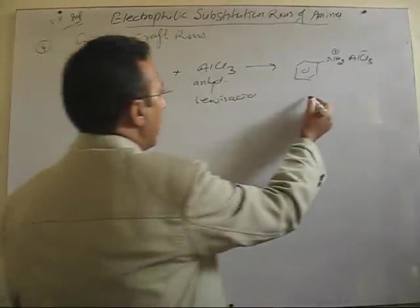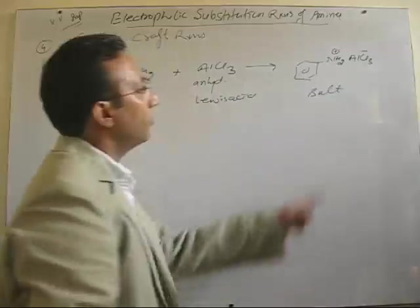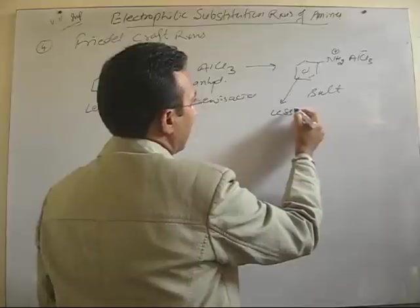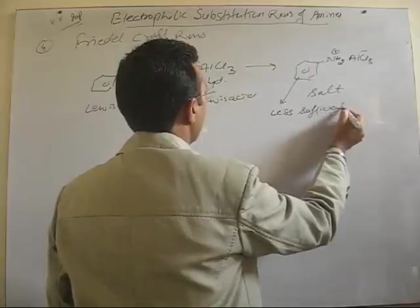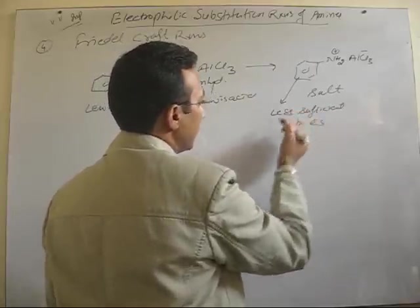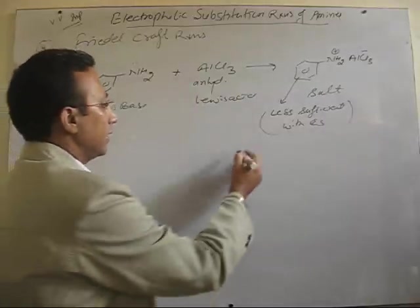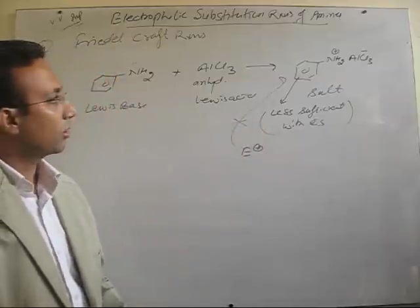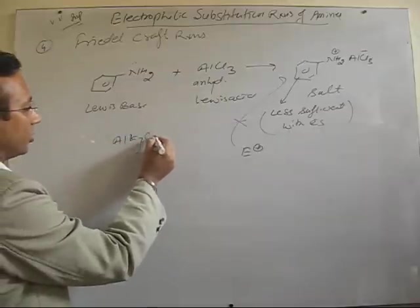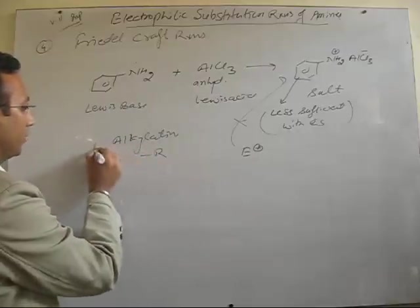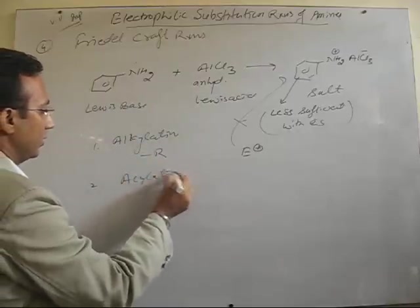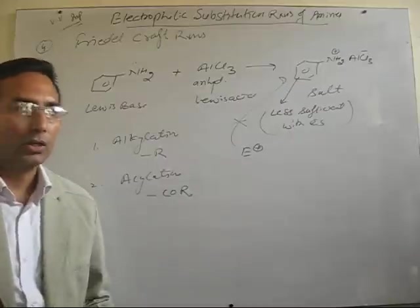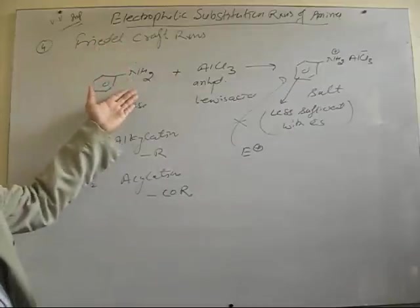So, this salt is formed. So, as a result of formation of this salt, the availability of lone pair on nitrogen is not there. As a result, the ring becomes less sufficient with electrons. So, that means electron density in the ring is decreased. As a result, electrophile takes very little interest to attack on the benzene ring. And substitution, that is Friedel-Crafts alkylation, substitution by R group, and Friedel-Crafts acylation, substitution by acyl group, do not take place. So, the usual question comes that why Friedel-Crafts reactions do not take place in aniline.